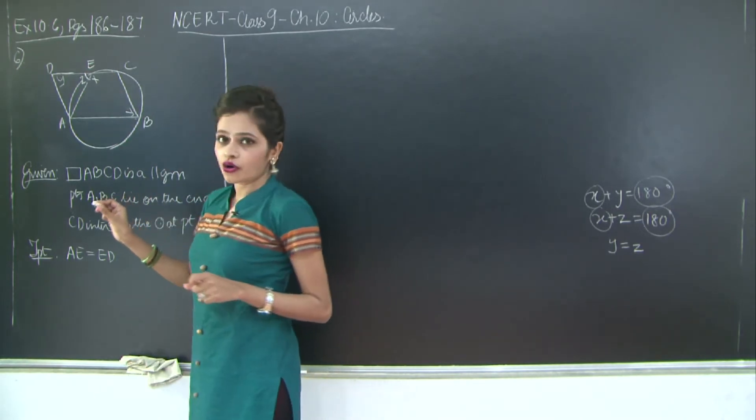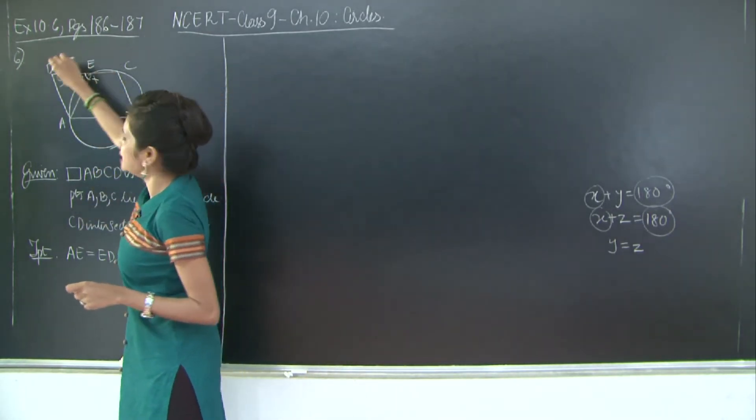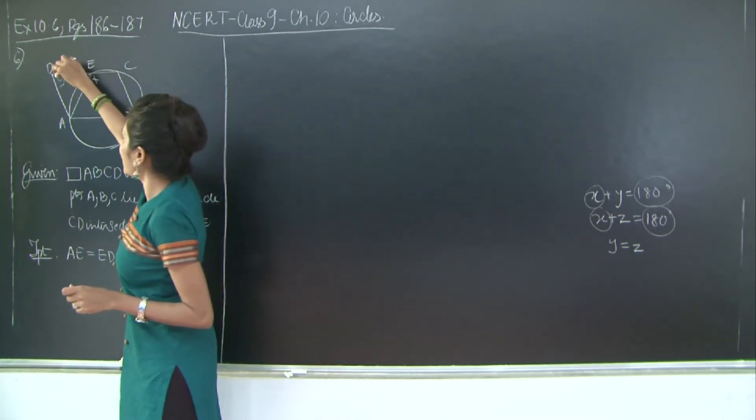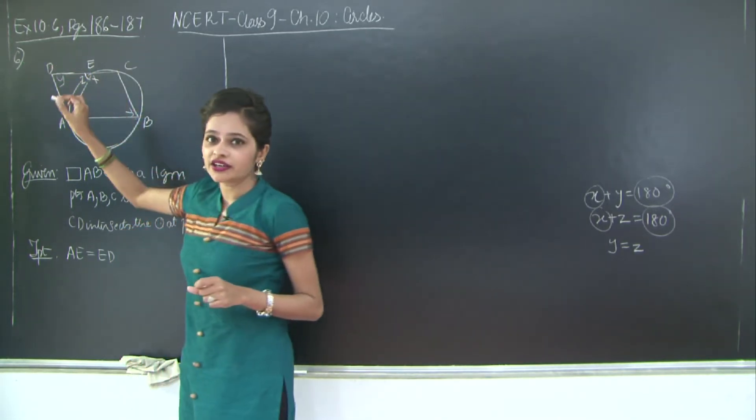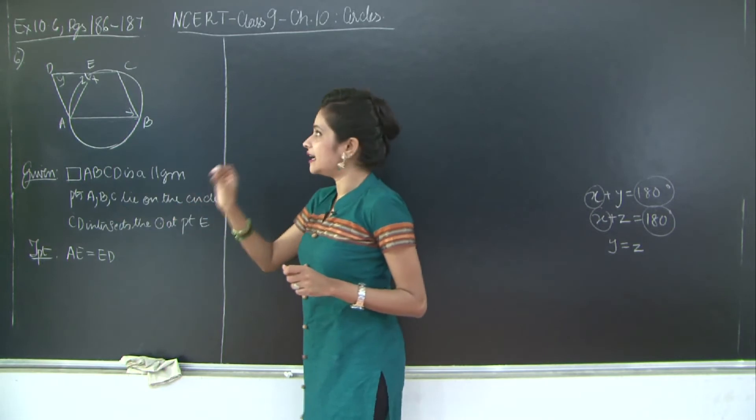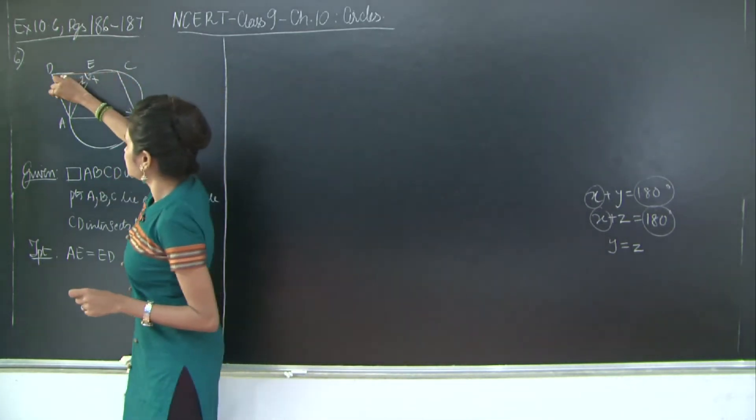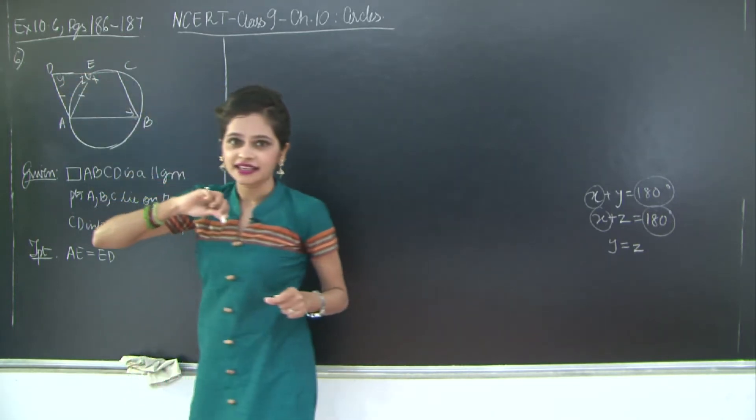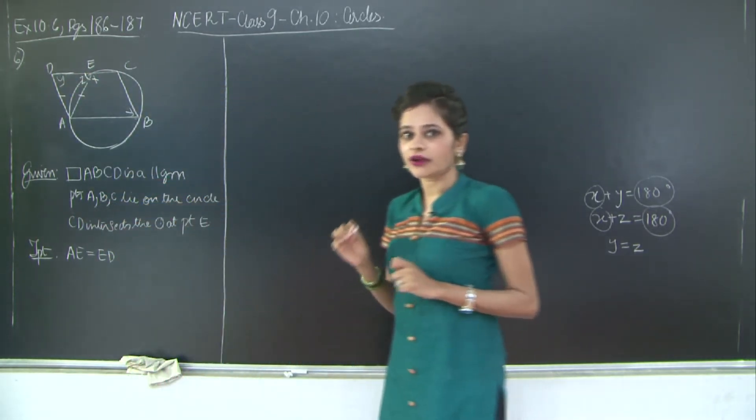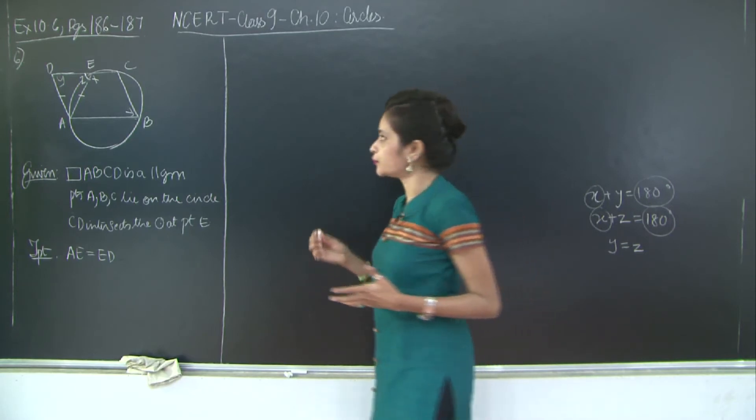So now this angle y out here is equal to this angle z. These are a part of triangle AED. So in triangle AED you have angle D and E equal to each other. Therefore triangle AED is an isosceles triangle. Therefore AD is going to be equal to AE. Simple. Let's go ahead and write the solution, or let's go ahead and write the proof.